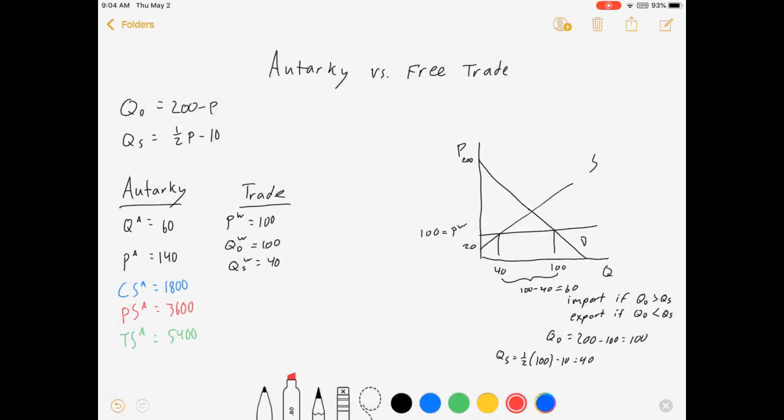So quick reminder to you guys, consumer surplus is everything below the demand curve up until the price. Below demand curve, above price. So it's all that stuff. You'll notice that it's very different than what it looked like in the autarky video, where it cut off there at equilibrium and was just all this space.